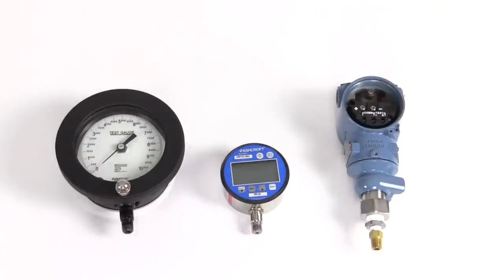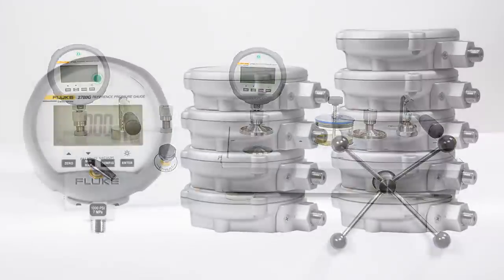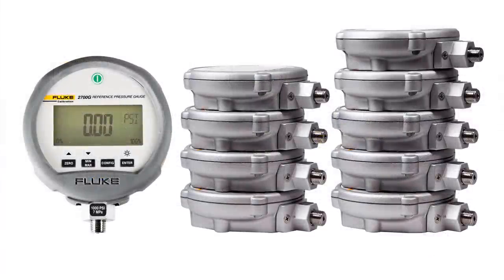The Fluke calibration 2700G reference pressure gauges and P5500 pressure comparators provide the accuracy, reliability, and capability you need to handle this wide pressure calibration workload. The 2700G reference pressure gauge is available in nine different ranges.